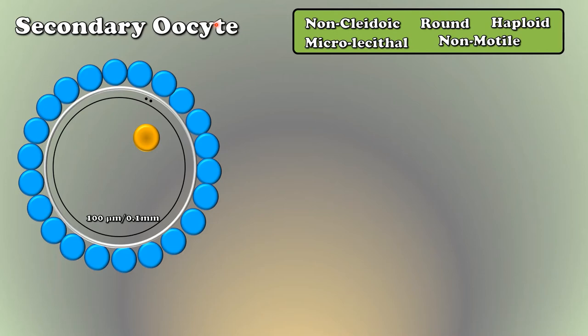It is non-cleidoic, i.e. without shell. Microlecithal means egg with small quantity of yolk. It is round in shape, non-motile and haploid in nature.